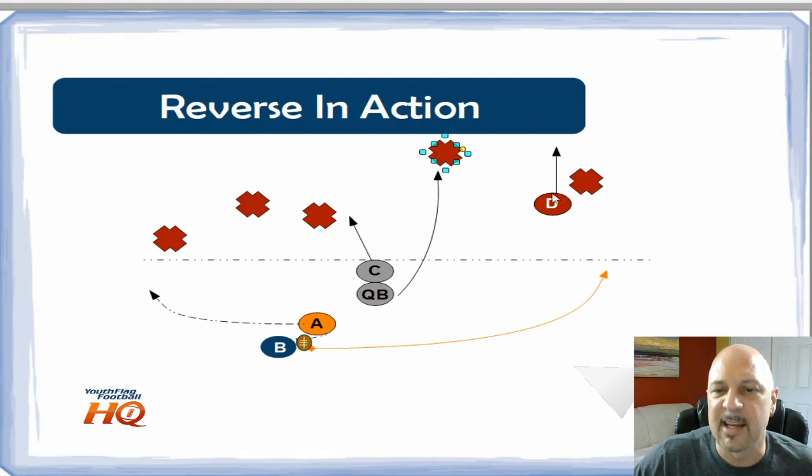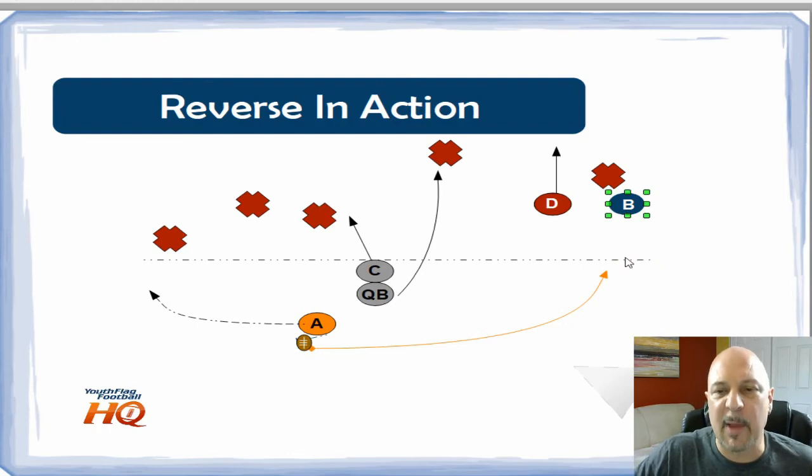The quarterback's running out which absorbs this guy, and D is running deep which hopefully pulls this guy out of position. Now B gets the ball and they're running over here, but there's really no one to stop them for a long time. Eventually this guy will come up and get a shot at B, but it's not until you're well downfield. If D has done his job and pulled this guy 20 yards downfield, this guy has to come all the way back and try to make a one-on-one tackle against B.